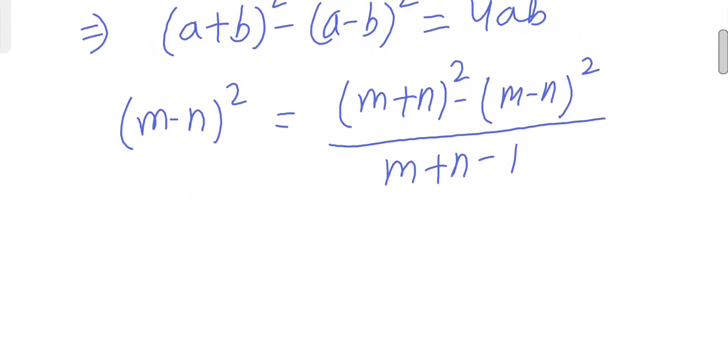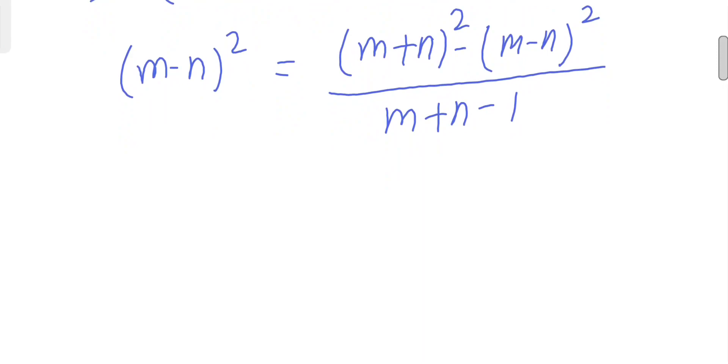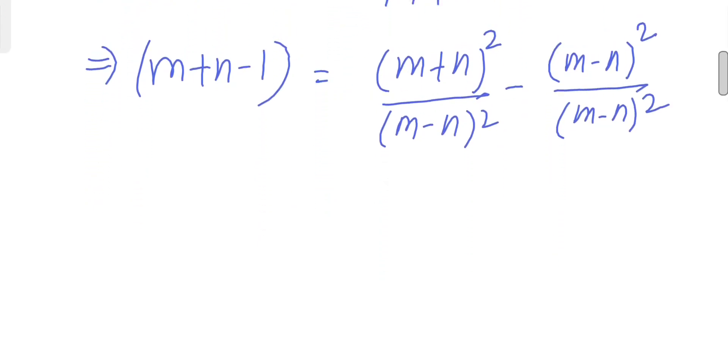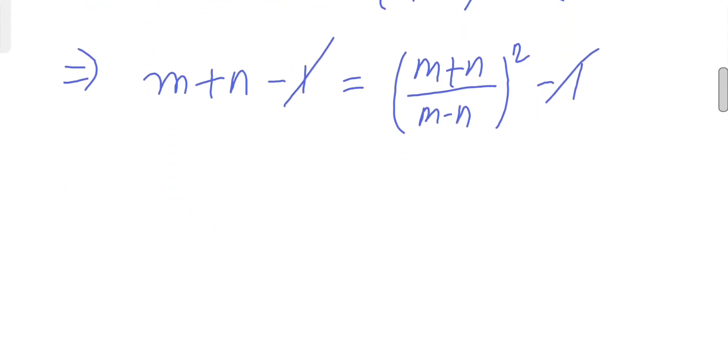A little bit of simplification is required here. This will give us... minus 1, canceling minus 1 on both sides, and further simplification.